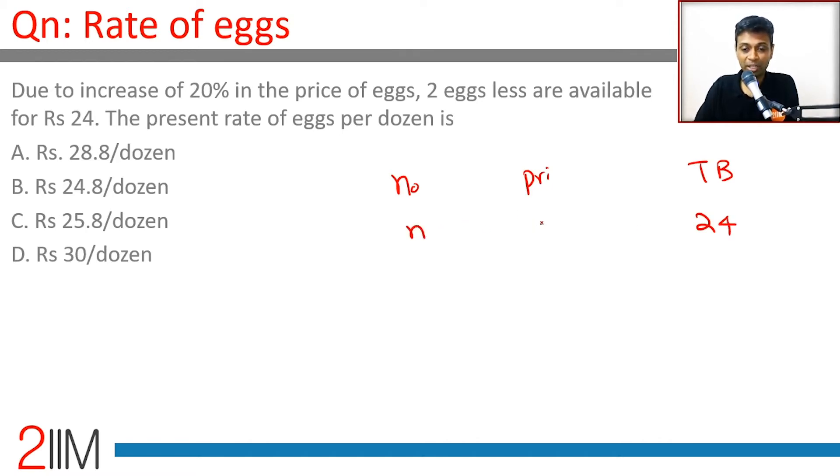You could buy N eggs at a price of P. The price goes to 1.2P, you can buy only N minus 2.